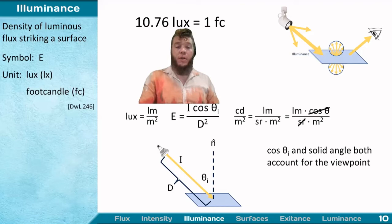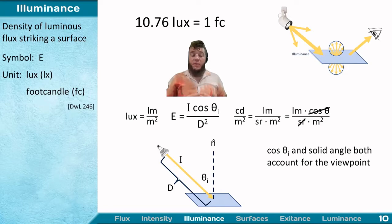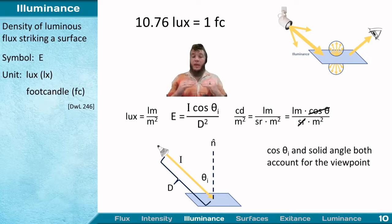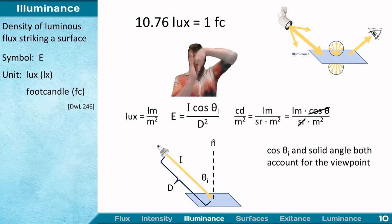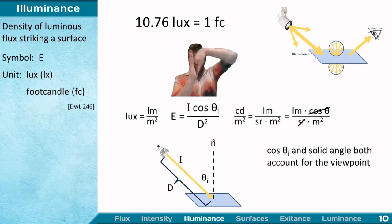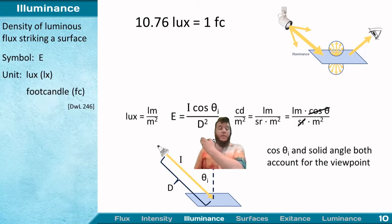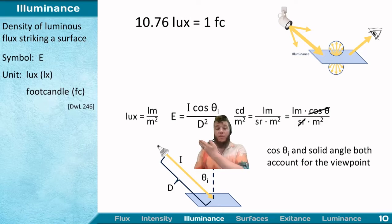Our fundamental illuminance equation is the inverse square law: illuminance falling on a surface equals the intensity directed toward that surface, multiplied by the cosine of the angle of incidence, divided by the distance squared. Light propagates radially outward, so intensity always falls off with the square of distance.